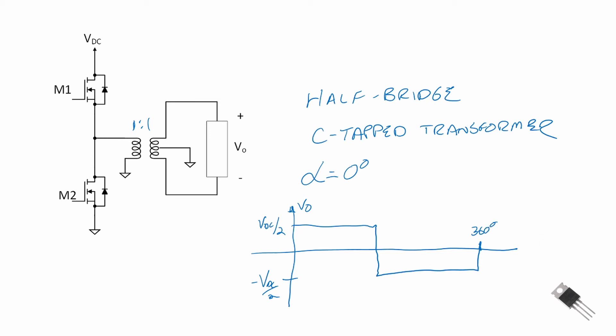The other advantage to using a transformer is it provides isolation. If our DC voltage is extremely high, there are times where we want to be isolated from the DC side or the DC power supply. We're also going to use this half-bridge configuration in later sections when we investigate what are called resonant converters.